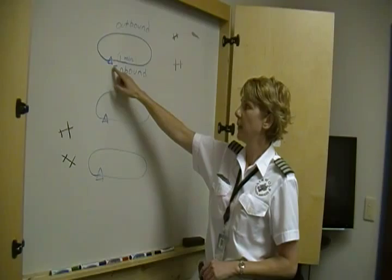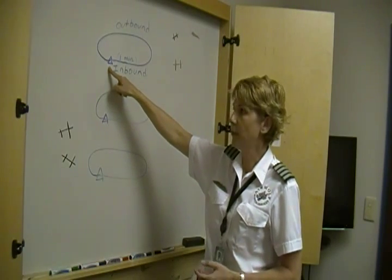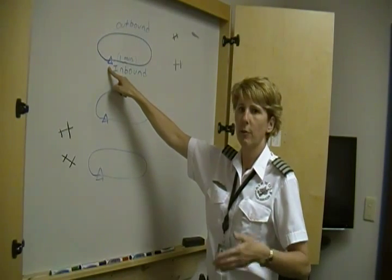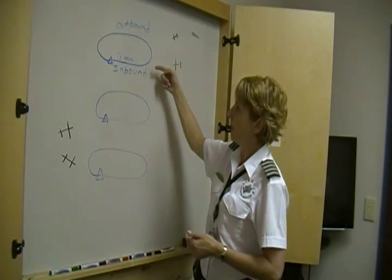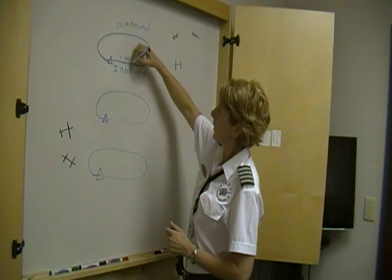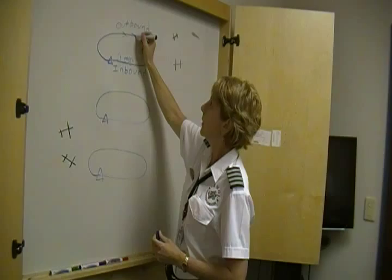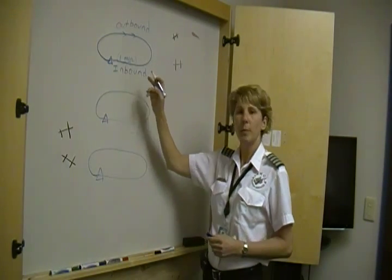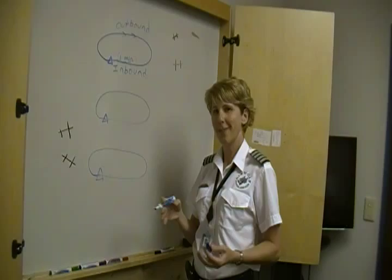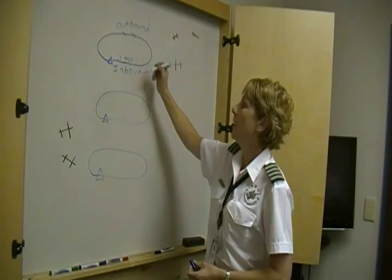When talking about holding patterns, there are a few terms we need to understand. The first one is the fix. The fix could be a VOR, it could be an NDB, or it could just be an intersection, or even a distance from one of those points — for example, 15 miles west of a VOR. Then we have an inbound leg, which goes toward the fix, and an outbound leg, which turns away from the fix. Notice this is a right-handed pattern, which is standard for a holding pattern — opposite of your normal VFR traffic pattern.